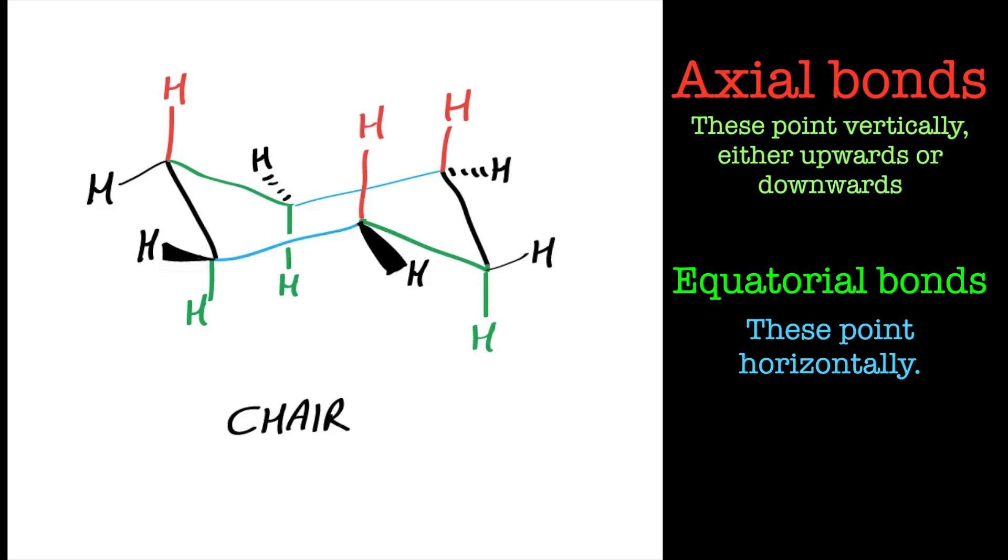So this all is derived basically from the sp3 nature of the carbon atom and trying to maintain this 109.5 degrees. This is a minimum conformation simply because none of the hydrogens are actually interacting. There's no steric hindrance in this one, and we'll see in the other conformations where you get powerful steric interaction.